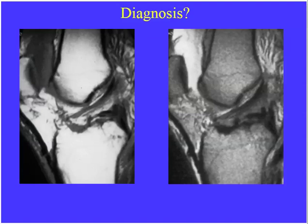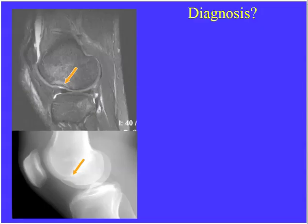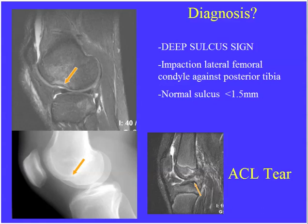A classic example: the ACL fibers look intact, but there's an avulsion of the tibial attachment site — ACL avulsion at its tibial attachment, more common in adolescents but also seen in adult skiers. Another classic: the deep sulcus sign — deepening of the lateral femoral sulcus with adjacent marrow edema on MR or plain film. The diagnosis is ACL tear, secondary to impaction of the lateral femoral condyle against the posterior lateral tibial plateau during the pivot shift mechanism. When you see marrow edema in the posterior lateral femoral condyle and lateral tibial plateau together, the answer is ACL disruption.